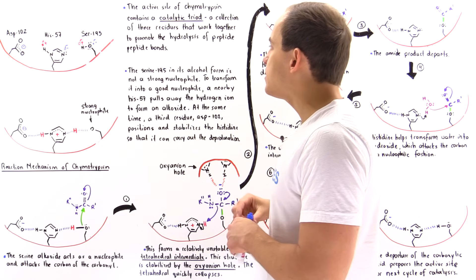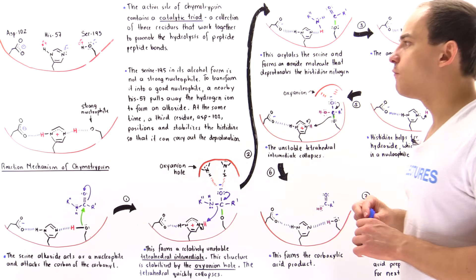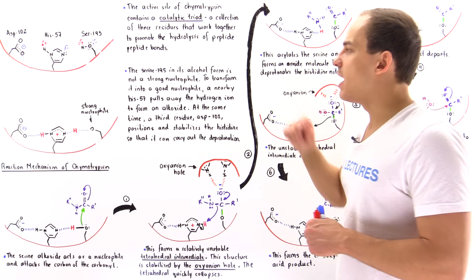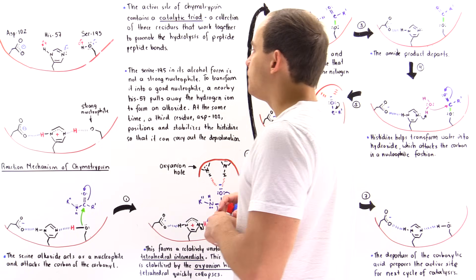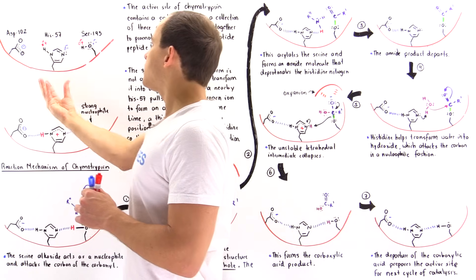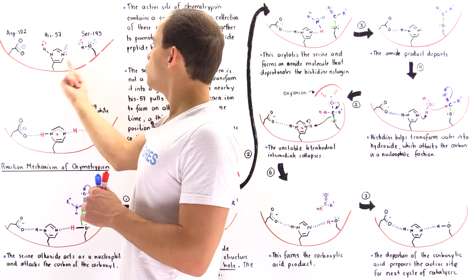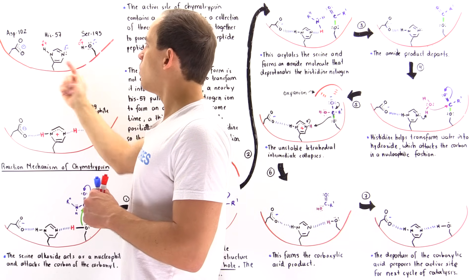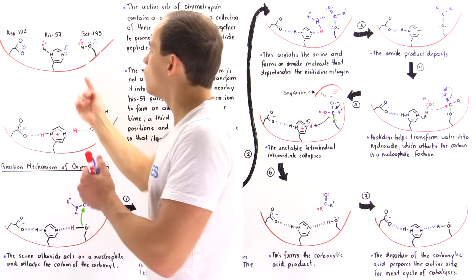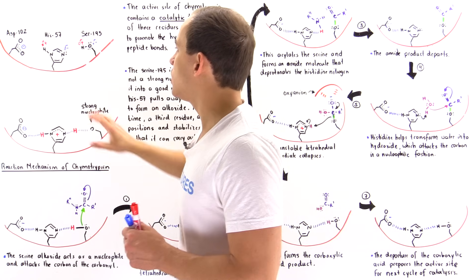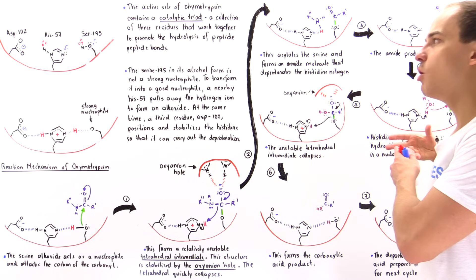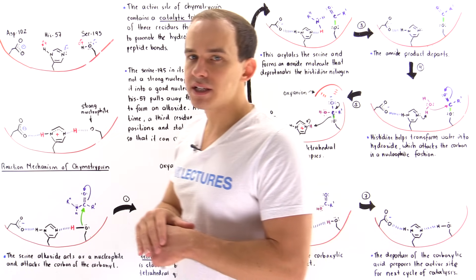Serine-195 in its alcohol form is simply not a strong enough nucleophile. To transform it into a better nucleophile, the nearby histidine-57 pulls away the hydrogen ion to form an alkoxide. To position the histidine correctly so these two residues can interact, aspartate uses its negative charge to move the histidine side chain into the correct orientation. Together, this catalytic triad promotes the cleavage of the peptide bond.